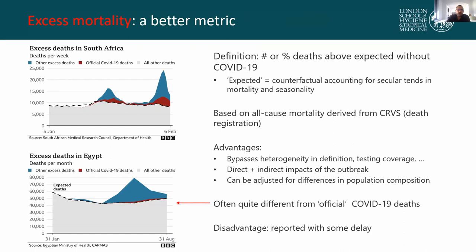As a group, we have come to realize that when it comes to mortality estimates, excess mortality is usually a better metric for quantifying the impact of the COVID-19 outbreak. Excess mortality is usually defined as the number or percentage of deaths above those that one would expect if COVID-19 were absent. The expected number of deaths is a counterfactual — a projected number accounting for secular trends in mortality and seasonal variation.